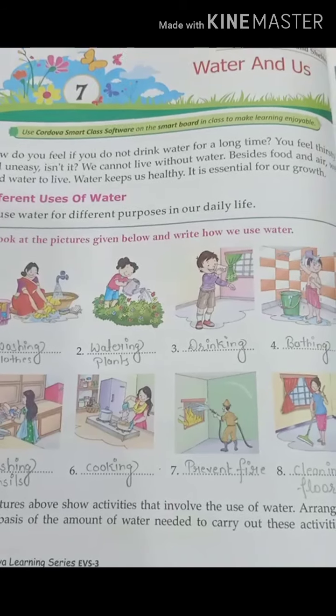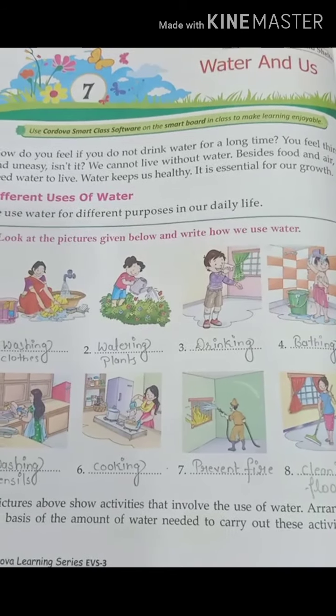We should be careful about water and should never waste or pollute it. Summary: water covers three-fourths of the earth's surface. Water is found in three forms — ice, water, and water vapor. Water can be changed from one form to another. The water cycle goes on in nature.